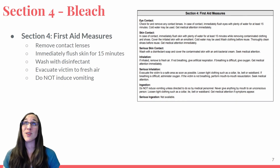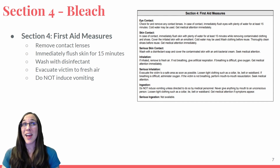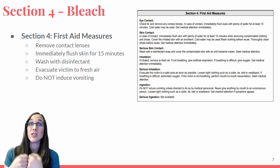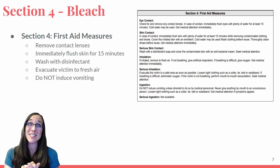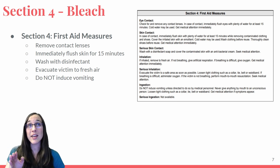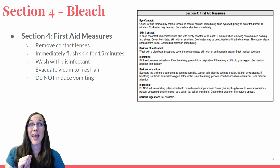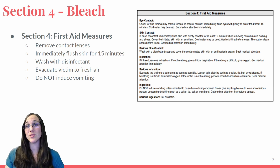Let's move on to section four — first aid measures for this chemical. If you were to come in contact with bleach, what should you do? If you get it in your eyeballs — which you never should because you should be wearing goggles — remove any contact lenses. If you get it on your skin, flush your skin for 15 minutes to make sure all the chemical comes off, and use disinfectant soap for serious contact. If you inhale it, move to fresh air. And if you were to ingest it, do not induce vomiting unless directed to do so by medical personnel.